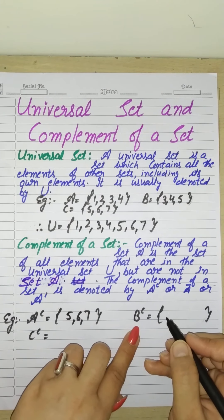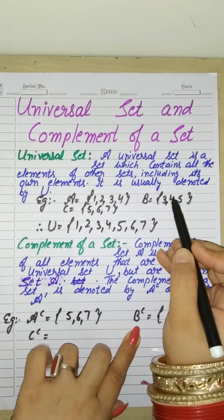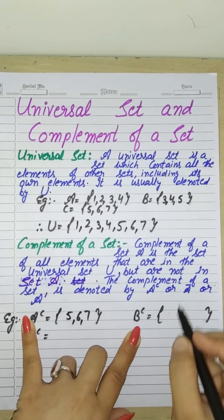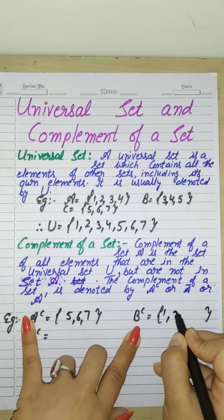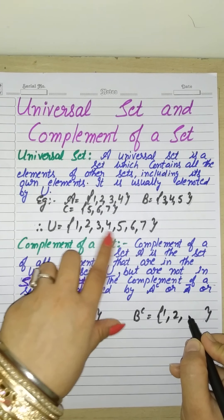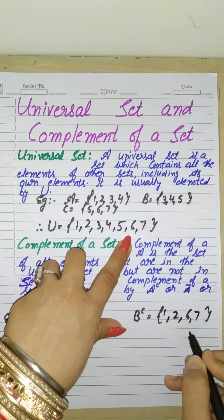If you want to find B's complement, then exclude B's elements: 3, 4, and 5. What will we include? 1, 2, 6 and 7.